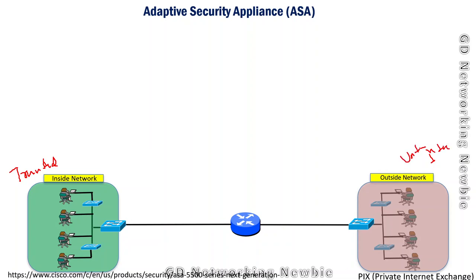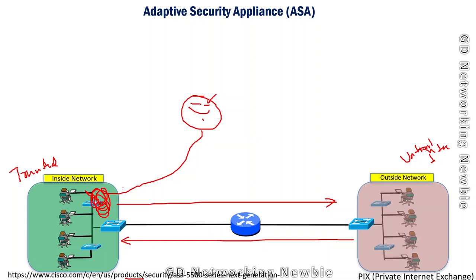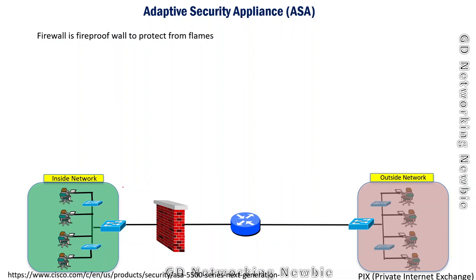In this scenario, users from the inside network can access the outside network and vice versa, and if there is no problem they can exchange information and everything works fine. But the problem occurs when there is some unauthorized user who wants to access the data available on the trusted part of the network — maybe accounting information, transactions, pictures, or whatever we have on the inside network. This is the point where we need a firewall — like a fireproof wall to protect us from these threats.